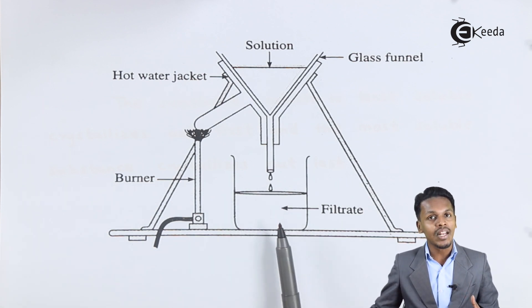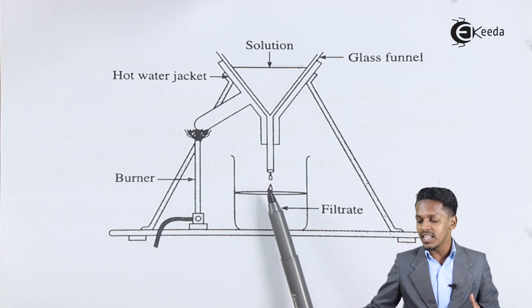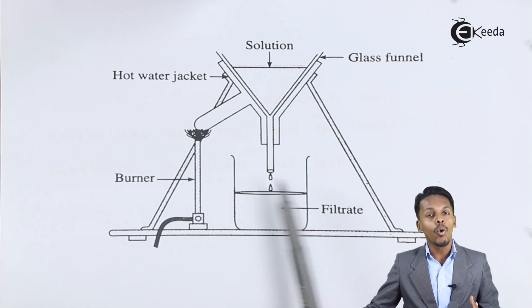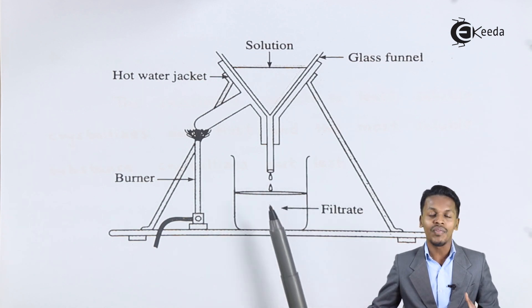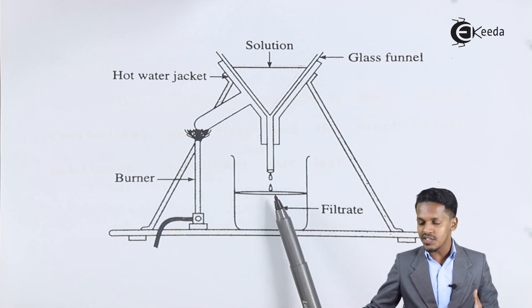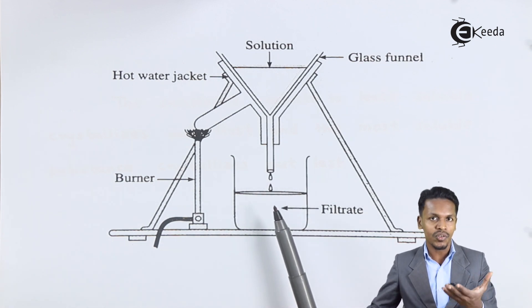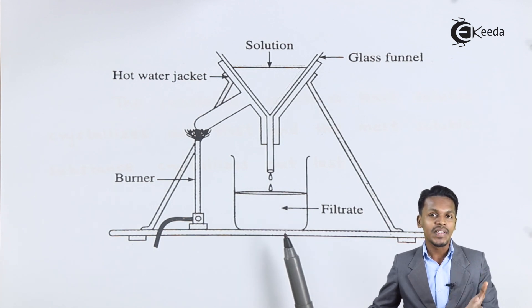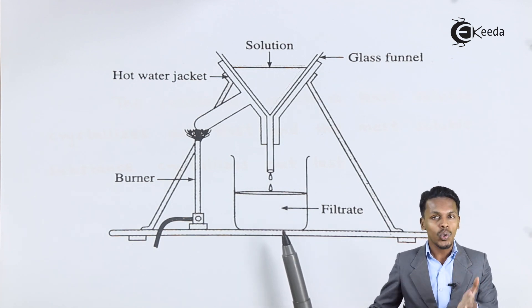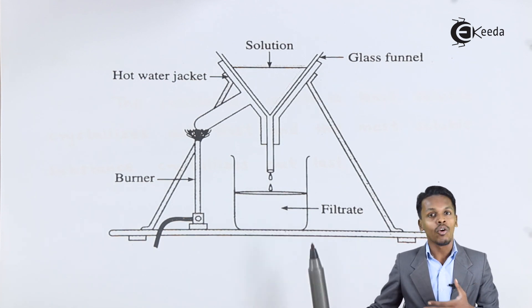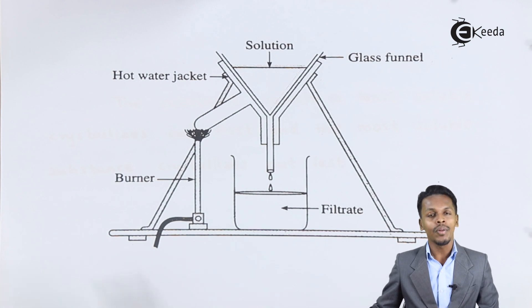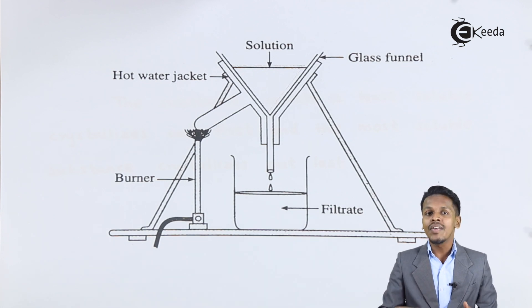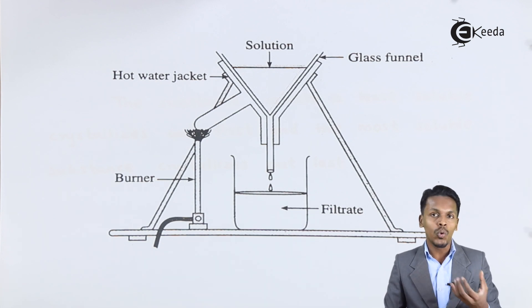Because glucose crystallizes out first, it collects on the filter, while fructose remains in the filtrate along with the solvent ethanol. Once we filter it, we can obtain the glucose crystals.